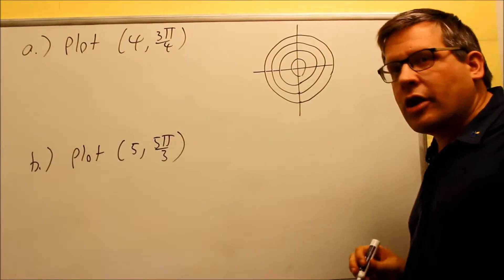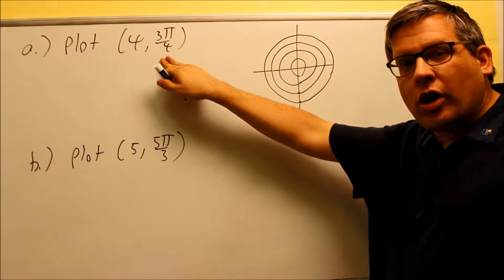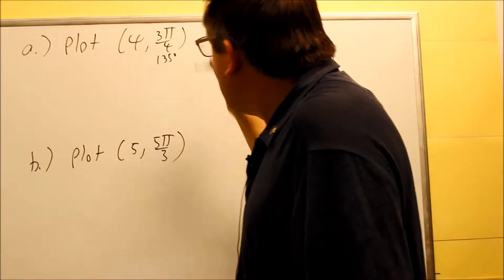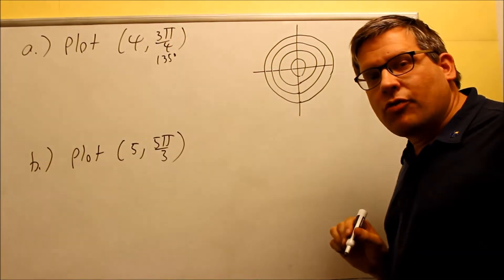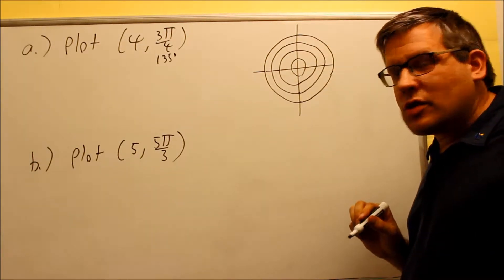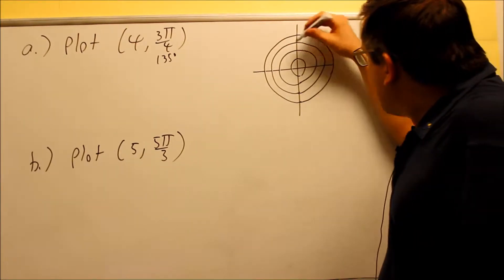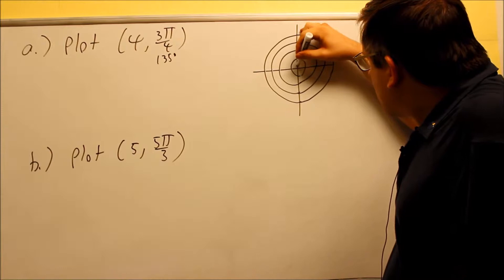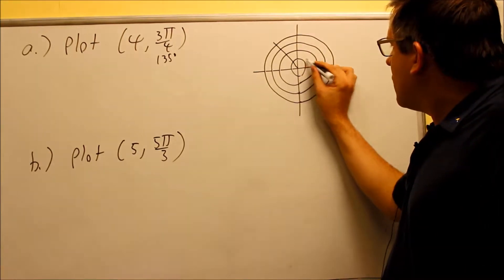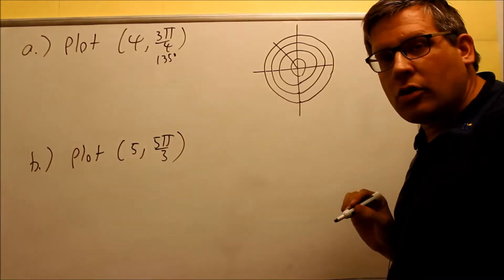So if you want to plot (4, 3π/4), here's how we'll do it. If you don't like radian measurement, you can always convert it back into degrees — that's going to be 135 degrees. So we're going to first draw 135 degrees. That's the angle between 90 and 180, which means it's going to be about right here. So I'll go ahead and draw this line — measured from here to here would be 135 degrees.